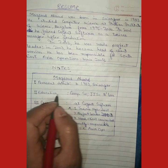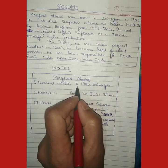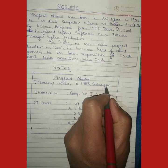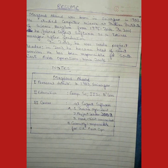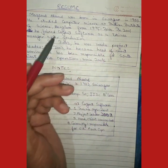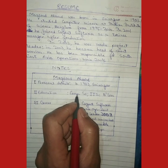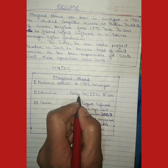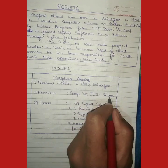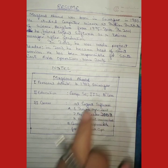The first full sentence has been represented in just two words: 1983 and Srinagar. The second step is education. We know he studied computer science at the Indian Institute of Science, Bangalore, from 1995 to 2000. We write it as: comp sc (computer science), IISC (Indian Institute of Science), Blore (Bangalore), with the years.